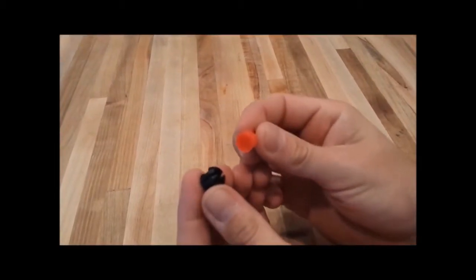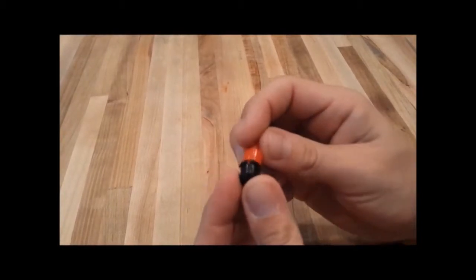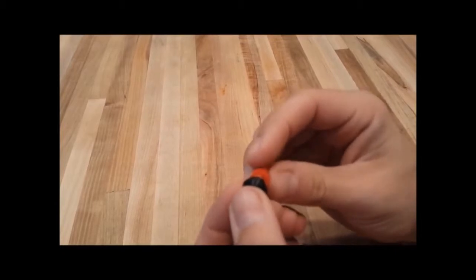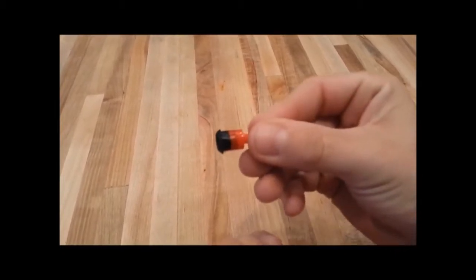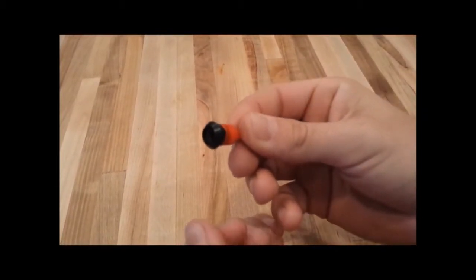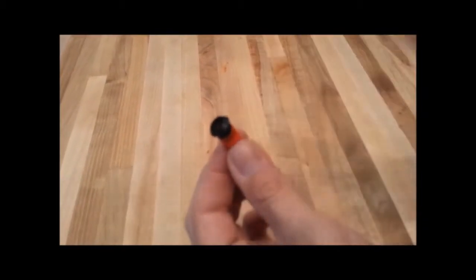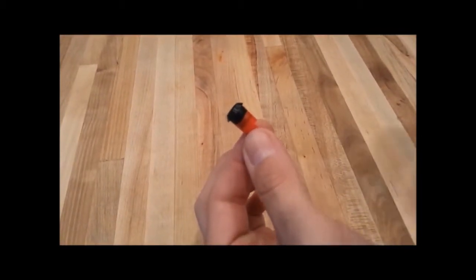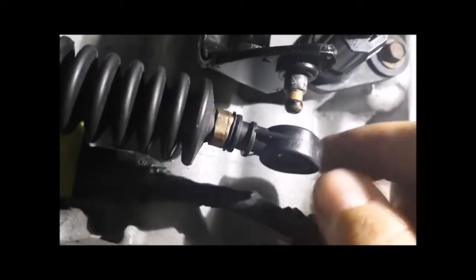Start by taking the bushing and pushing it into the installation tool like this. After you remove all of the old bushing from the transmission cable, it should look like this.